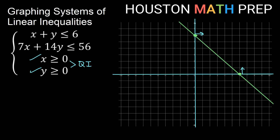Now for the less than part: y is positive, so I shade exactly the direction I see here — less than is below. I need to be below this line. Since we already know we need to be in quadrant 1, I just care about that space. So this line is graphed with its direction.